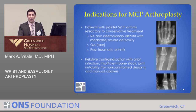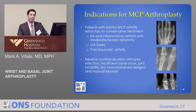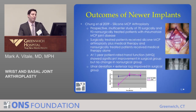What are the indications for MCP joint replacement? Patients with symptomatic painful arthritis that have not done well with conservative treatment — including those with rheumatoid disease, inflammatory arthritis, and rarely osteoarthritis or post-traumatic arthritis. Contraindications are similar to other joint replacements: we do not perform them in patients with prior infection, bad bone stock, or insufficient joint stability.